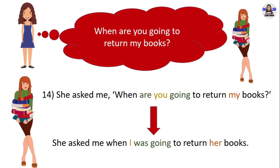Next example: 'When are you going to return my books?' She asked me 'When are you going to return my books?' in direct speech. In reported speech, she asked me when I was going to return her books. 'Are going to' changes into 'was going to.' Pronoun 'you' changes into pronoun 'I.' Possessive pronoun 'my' changes into possessive pronoun 'her.'